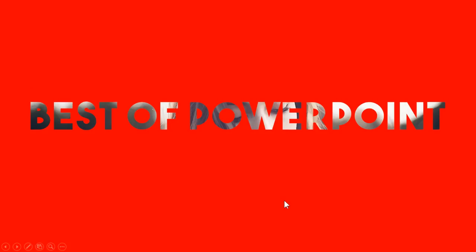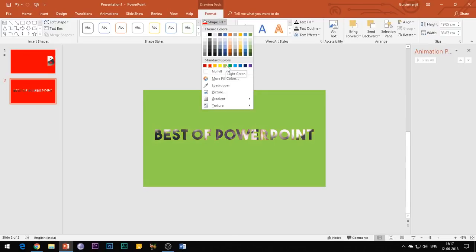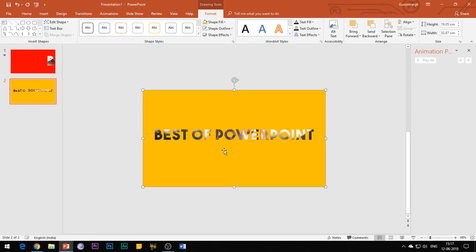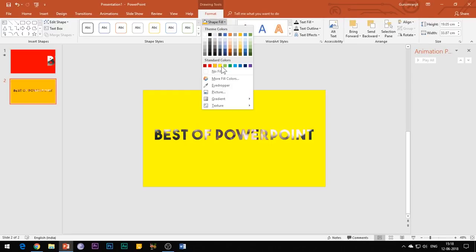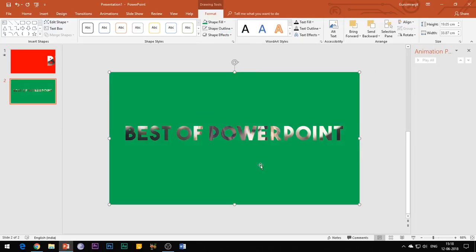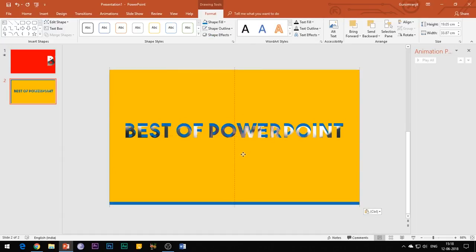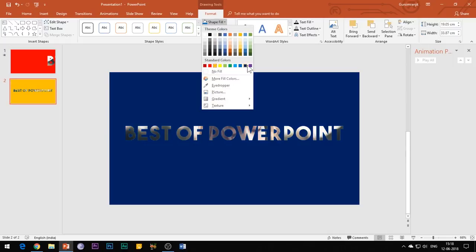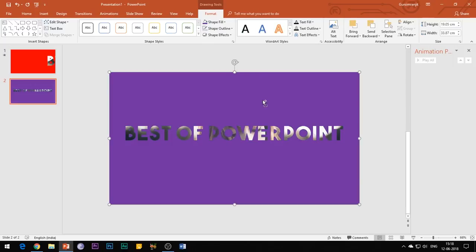Now here comes the very crucial part of this effect. Count the number of alphabets in your heading text and make that many duplicate copies of it. In my case, I will be making 16 copies of this shape and give each copy a separate color as random as possible. You can use Ctrl+C to copy and Ctrl+V to paste. Please take care that all the shapes must be completely overlapping with each other.